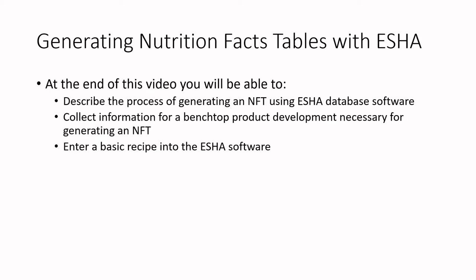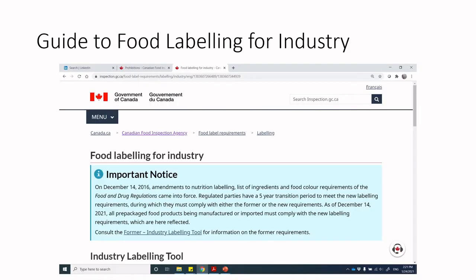We'll collect the information for a benchtop product development necessary for generating an NFT, and we'll enter a basic recipe into the ESHA software. We'll see some of the fun nuances of what ESHA can do and what ESHA can get people into trouble with if we don't pay attention to the little details. We're referring back to the Guide to Food Labeling for Industry — that's published by the Canadian Food Inspection Agency.